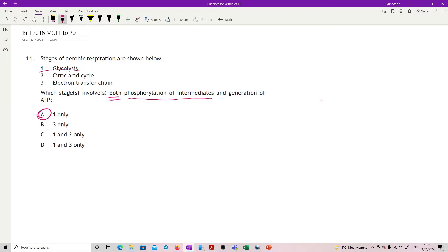Just to be clear, citric acid cycle you do actually get that one ATP but you're not using phosphorylation of intermediates during it. And the electron transfer chain technically doesn't, though if we take ATP synthase in there as well, yes, that would be generation of ATP. But yeah, has to be one.